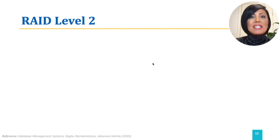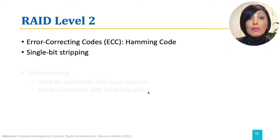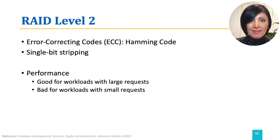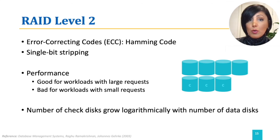RAID level two uses error correcting codes and single-bit stripping. Single-bit stripping distributes data at the bit level over disks, meaning the unit of transfer from d disks is a set of d blocks. Therefore, RAID level two is good for workloads with large requests and bad for workloads with small requests. In our example with four data disks, RAID level two will have three check disks, bringing utilization to 57%. The number of check disks grows logarithmically with the number of data disks, so effective utilization increases as the number of disks grows.